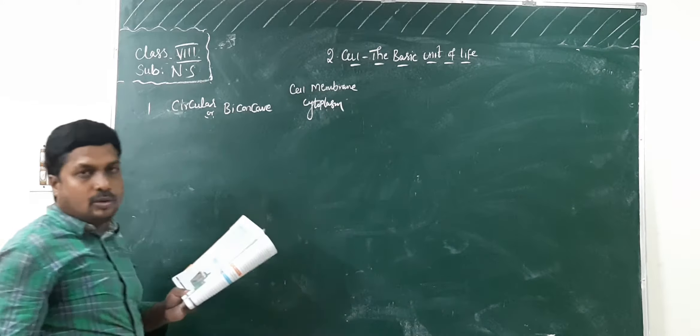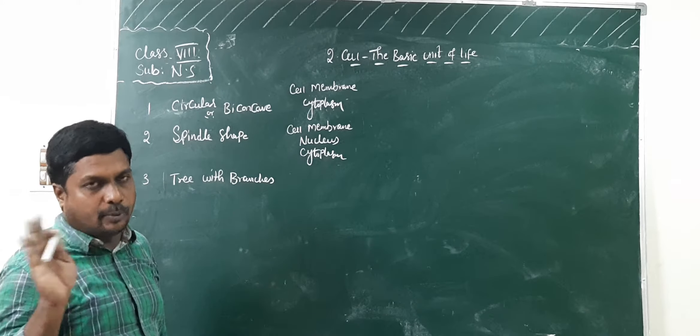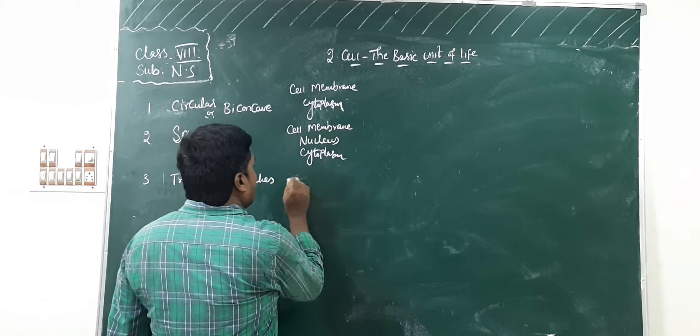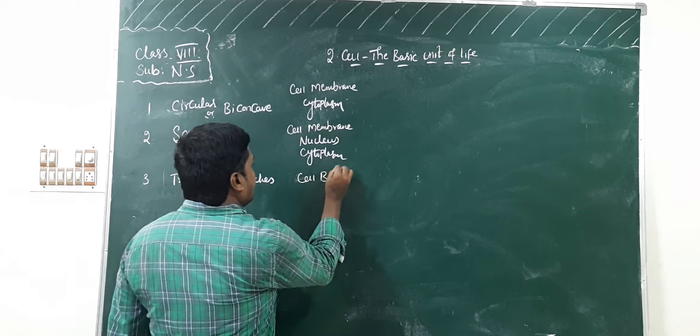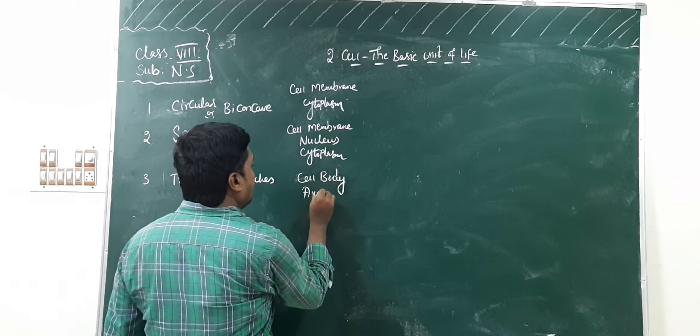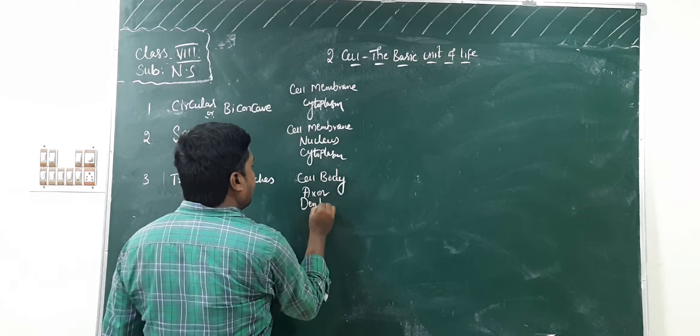Next one is nerve cell. How does the nerve cell look? Like a tree with branches. For parts, you have to write three parts — that is enough. Write: cell body, axon, and dendrites.